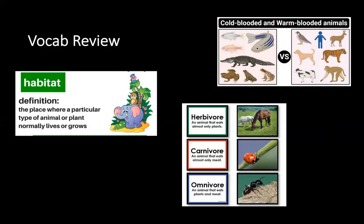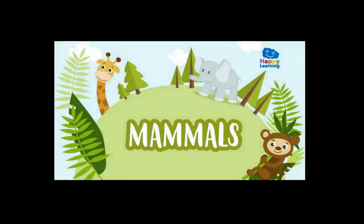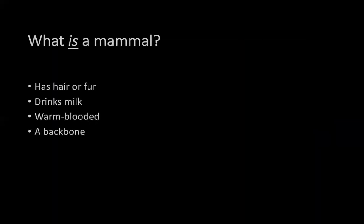The picture at the top of the screen shows examples of each type of animal. The first type of animal we are learning about today are mammals. A mammal is an animal that has hair or fur, drinks milk, is warm-blooded, and has a backbone. If you can think of an animal that fits this description, pause the video and write it down in your notebook.